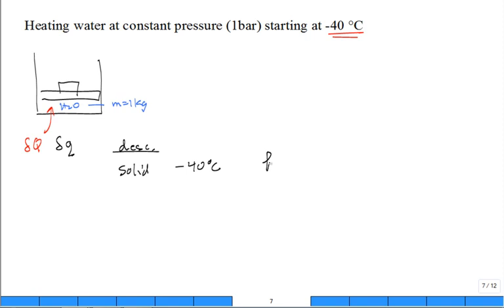Can you find the enthalpy of water at 1 bar and -40°C? That would be in kilojoules per kilogram, the specific enthalpy — look it up in Table A6. As we begin heating it, we start the process of adding heat.